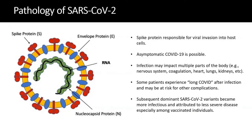What did we learn from COVID? We learned something new about the virus each week. From classic virology, we knew the spike protein was responsible for viral invasion of host cells. What was new was that asymptomatic COVID-19 was possible — not appreciated early on because respiratory viruses were expected to be symptomatic. We also realized this virus did more than just cause respiratory infection: the nervous system, coagulation cascades, heart, lungs, and kidneys were all affected. Now we have long COVID, which we still don't fully understand. Subsequent variants became more infectious but less associated with severe disease, especially among vaccinated individuals.